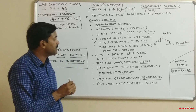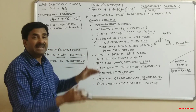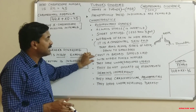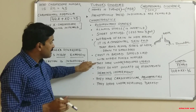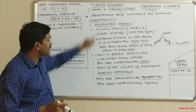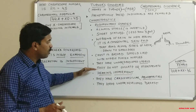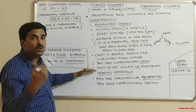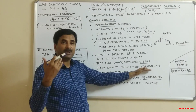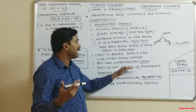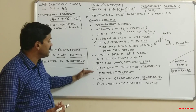The chest is broad and shield-like, with widely placed nipples. Similar to the underdeveloped ovaries, the uterus is also underdeveloped. These individuals do not ovulate and lack menstruation — since a normal female produces ovum during menstruation, the absence of menstruation means they cannot undergo the process of ovulation.